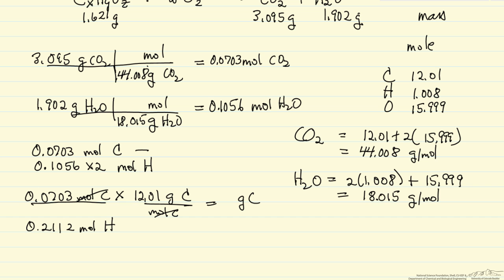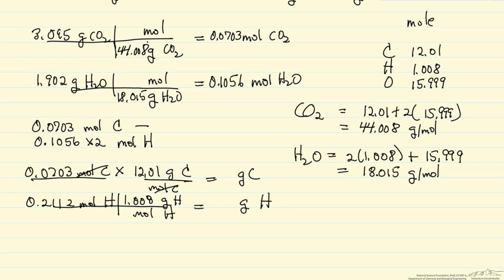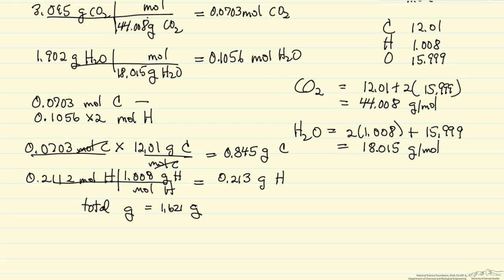I'm going to do the same thing, so I did this multiplication, and now I'm going to multiply this by 1.008 grams of hydrogen per mole of hydrogen. It's going to be the grams of hydrogen in my starting unknown compound. So I have the grams of carbon and the grams of hydrogen, and I know that the total grams of the starting compound, 1.621 grams, I can then calculate the grams of oxygen. So the grams of oxygen atoms would be our total minus the number of grams of carbon minus the number of grams of hydrogen.